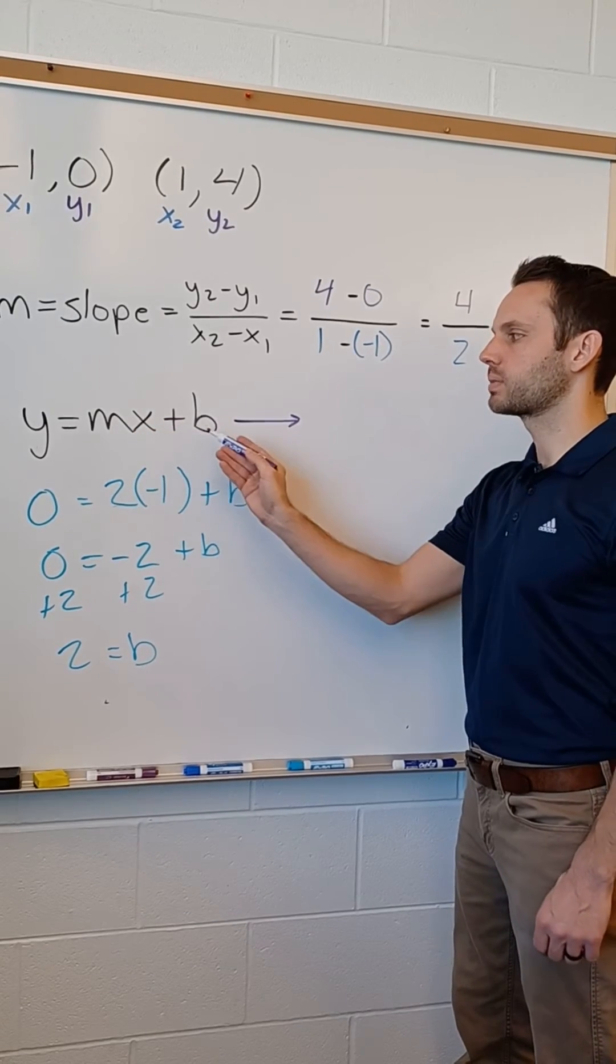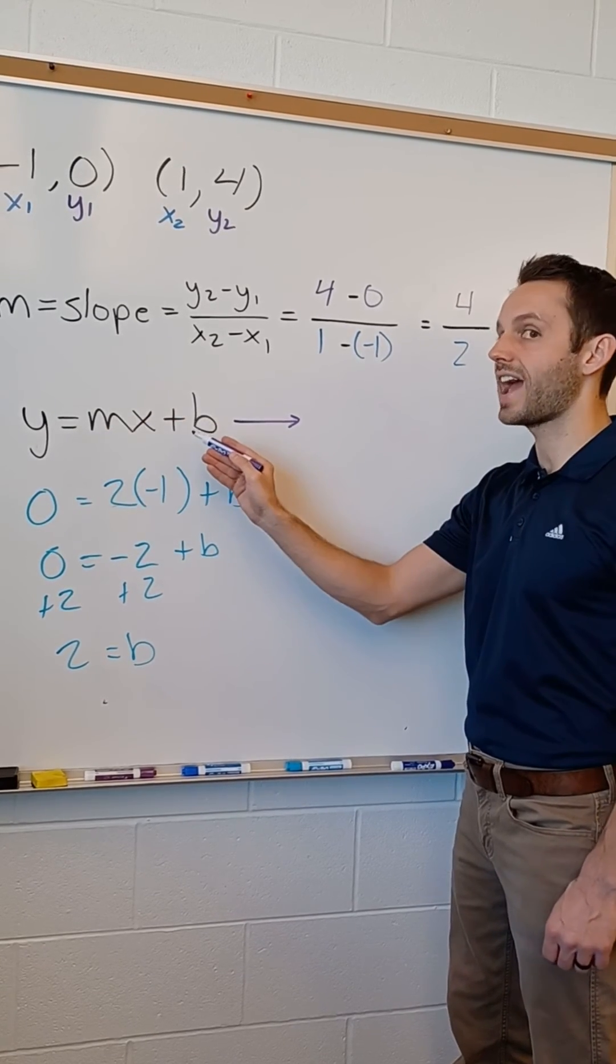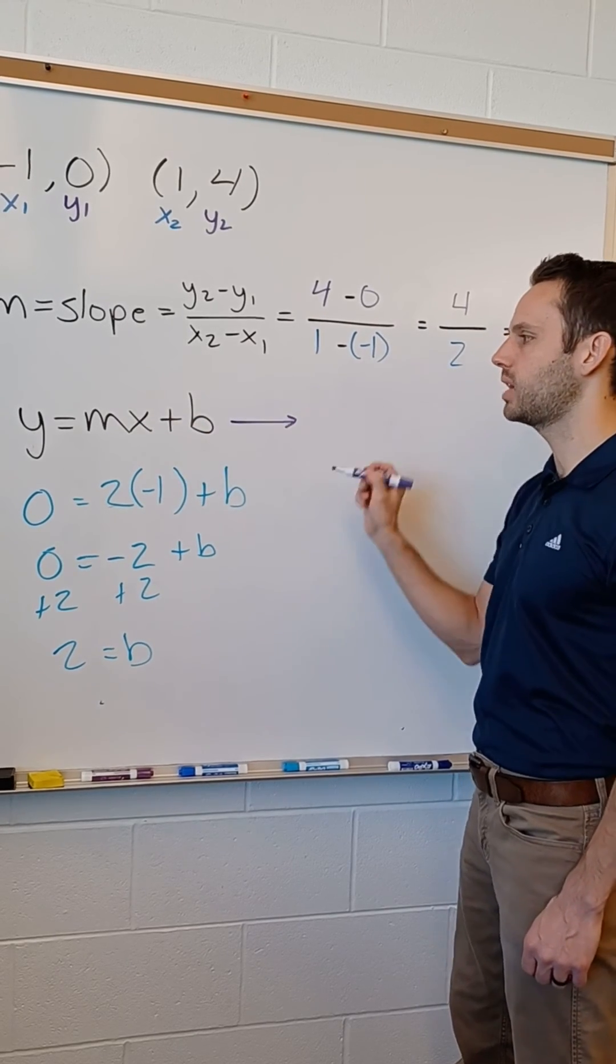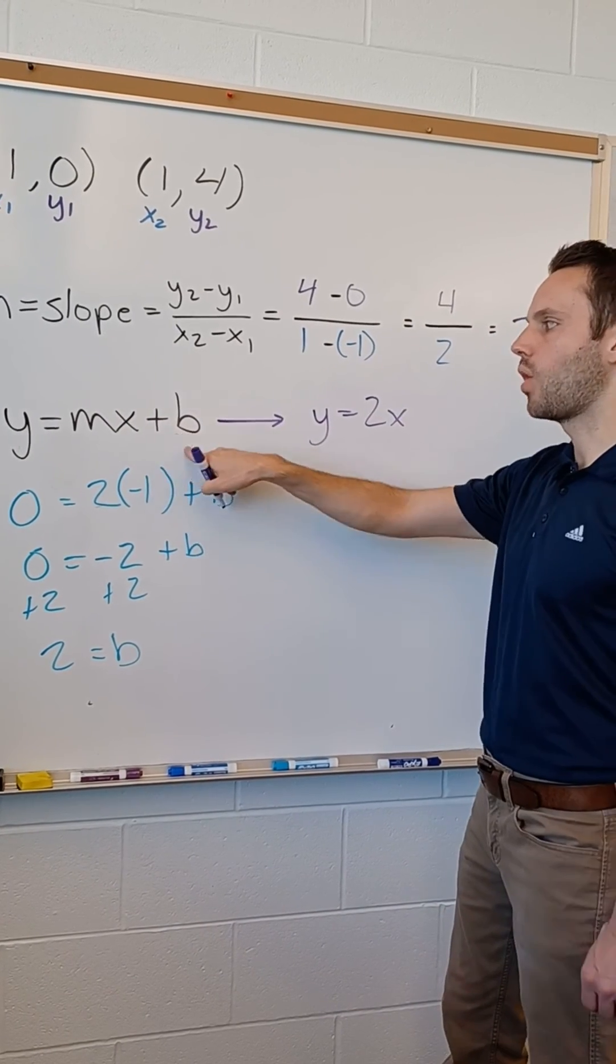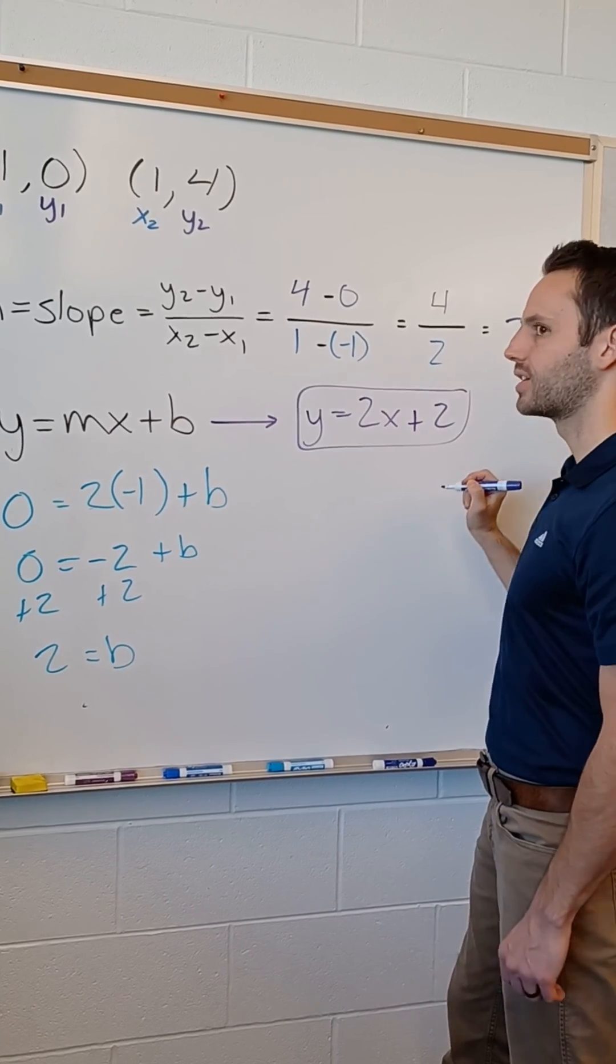Final step, y equals mx plus b is our form. We're going to leave y and x alone. We're just going to change m and b. y equals our slope was two. We add our y-intercept, which was also two, and we are done.